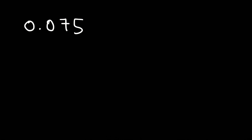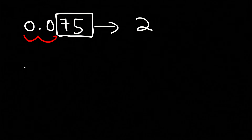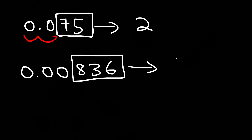What about zeros to the left of a number, like .075? Leading zeros are never significant. So there are only two significant figures — the 7 and the 5. Similarly, .00836 has only three significant figures.